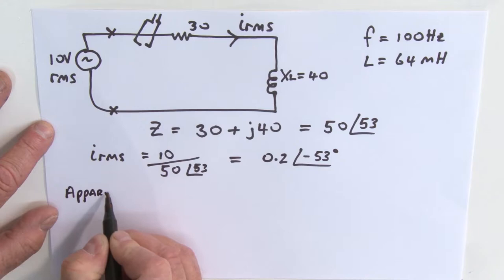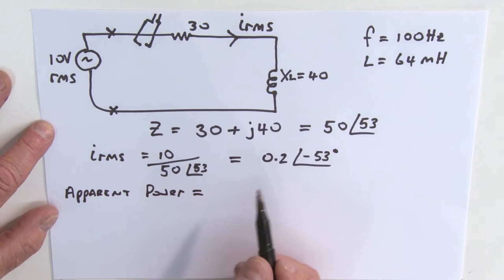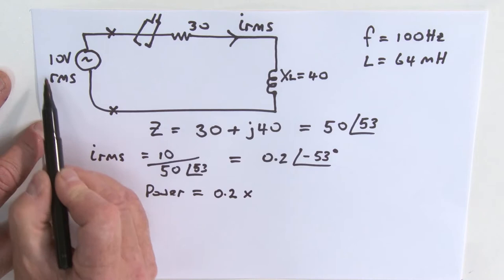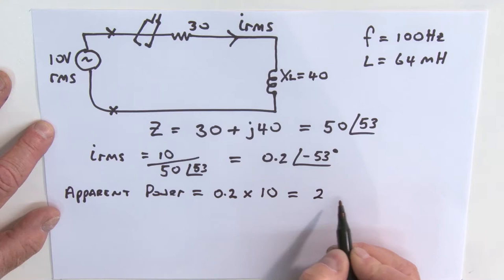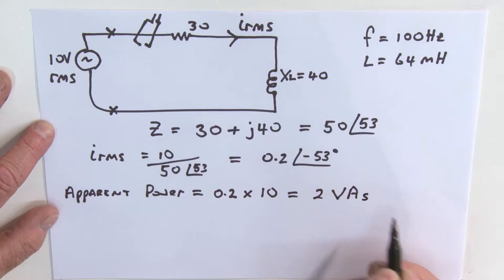The apparent power in the circuit is going to be equal to this current, 0.2, multiplied by the source voltage, which is 10. This gives us 2, and the units here are VAs, volt amps. That's the apparent power.